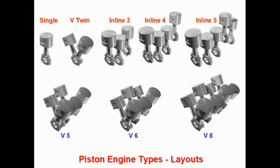There are two basic types of engines: external combustion engines and internal combustion engines. In an external combustion engine, the combustion of fuel takes place outside the engine. The steam engine is an example of an external combustion engine.